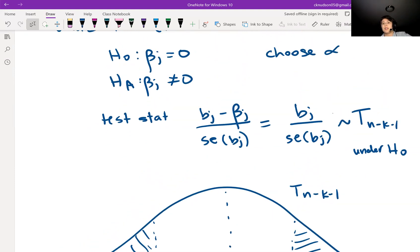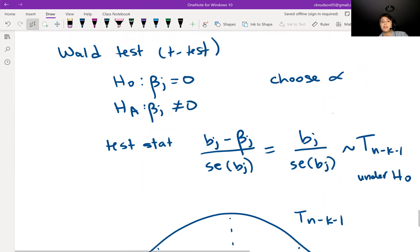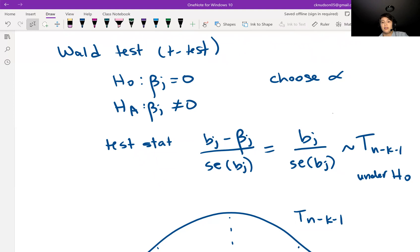What this is saying is given that we have all of those other predictors in the model, so given that we have all of the predictors besides XJ in the model, we're wondering, do we still need to have XJ in the model, or can we remove XJ?